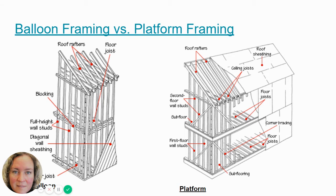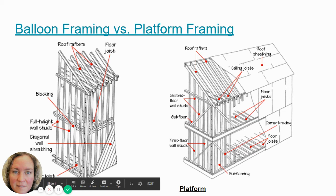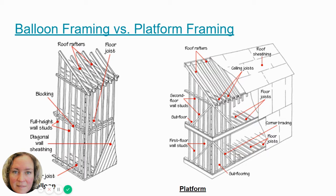With balloon framing, because we're creating these openings — called chases — between the studs, they need to be blocked for updrafts and fire stop. There are little pieces of wood between each stud to create a barrier between the two floors. The floor itself is hung on each stud by being attached to it; the floor joist is attached to the stud, pulling the studs in and creating the floor system.